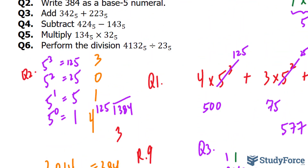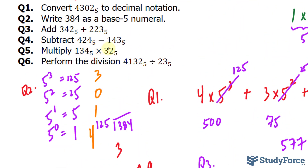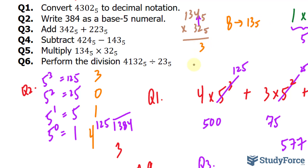Question 5: Multiply 134 sub 5 times 32 sub 5. We multiply as usual. 2 times 4 is 8, and in base 5 that's 13 sub 5, so we write down 3 and carry the 1. 2 times 3 is 6 plus 1 is 7, which is 12 sub 5, so we write down 2 and carry the 1. 2 times 1 is 2 plus 1 carried is 3.